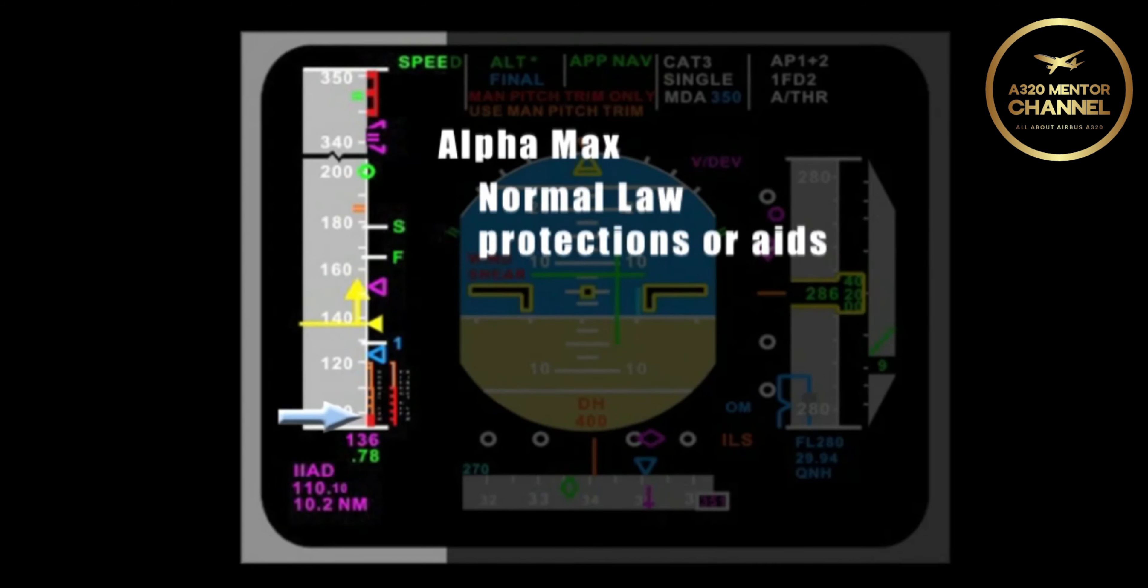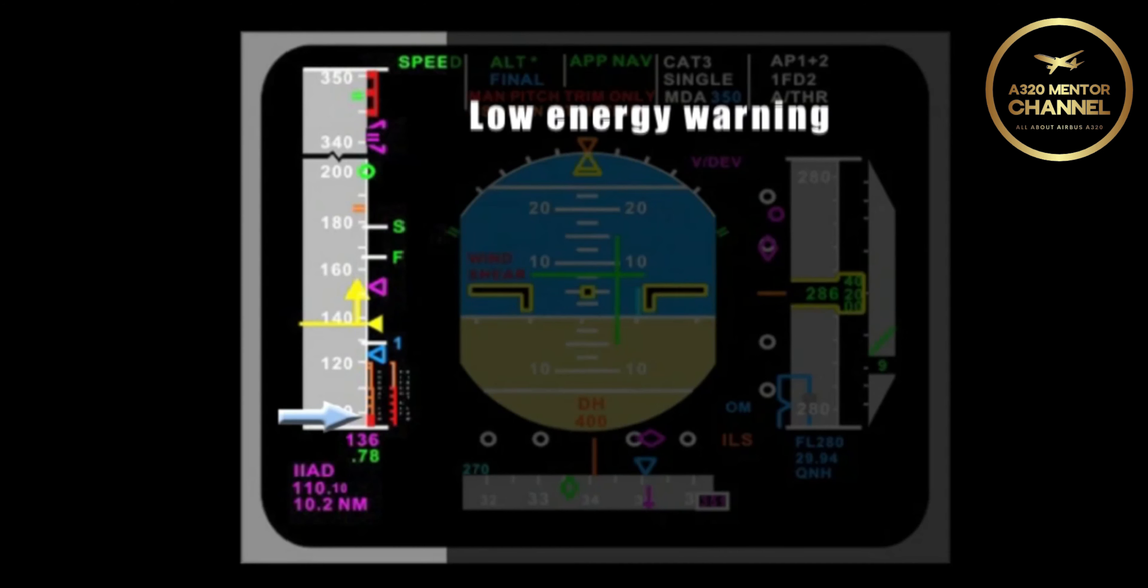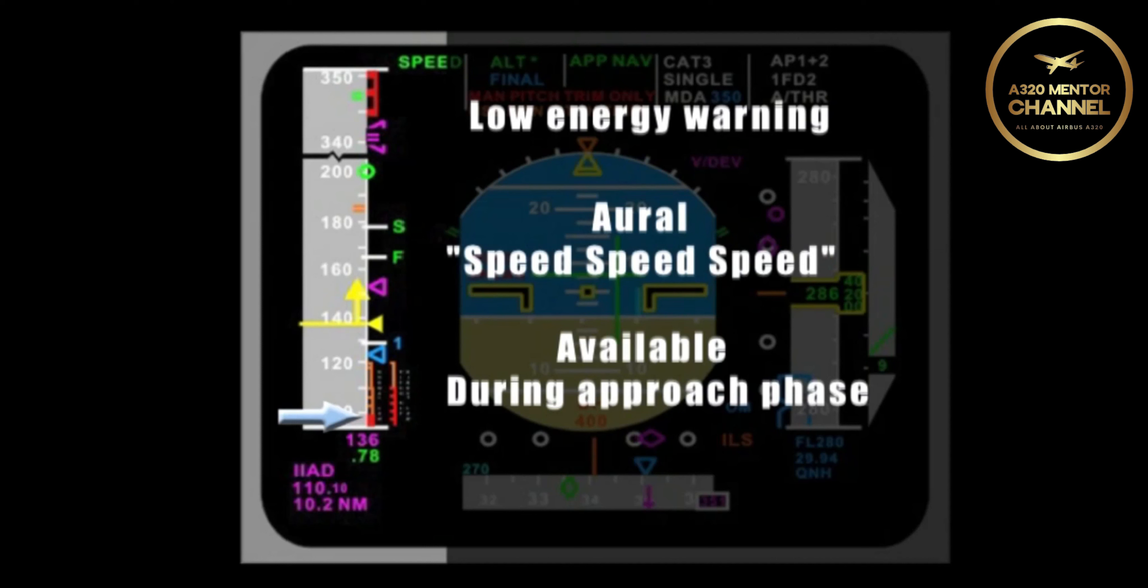Are there any other protections available? There are two more normal law protections or aids. One is a low energy warning and the other is alpha floor. What is the low energy warning? You are going to hear the low energy warning with the speed, speed, speed oral warning that tells the pilot that the only way to get a positive flight angle is to add thrust.